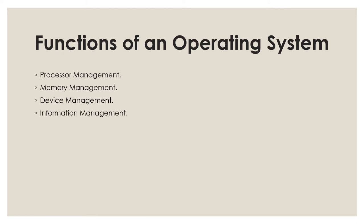Next is information management. A computer system works with information — it stores information, processes information, and provides information. Managing this information is also an important task performed by an operating system. The final function is file management: the operating system manages the files, folders, and directory systems on a computer.